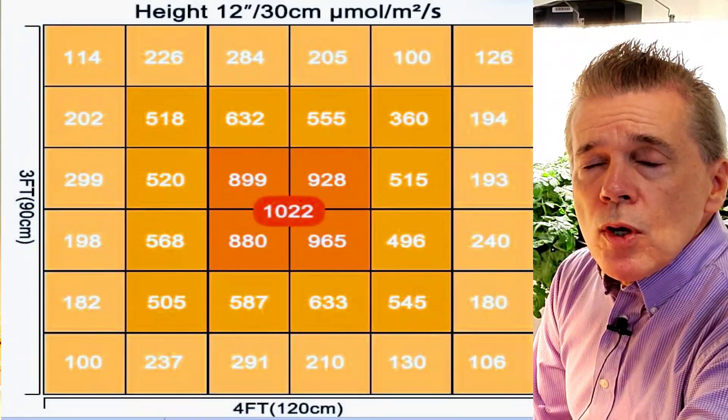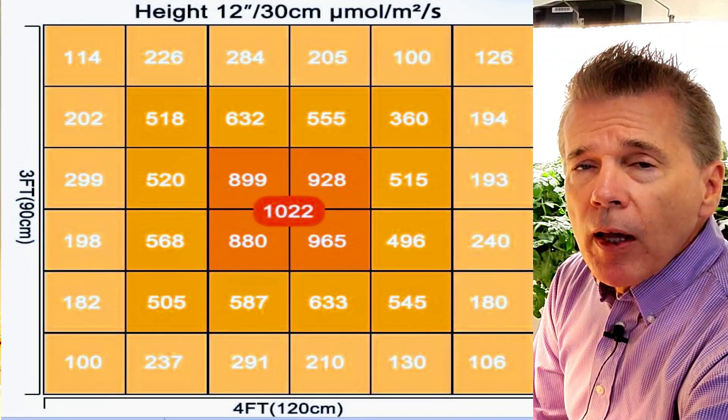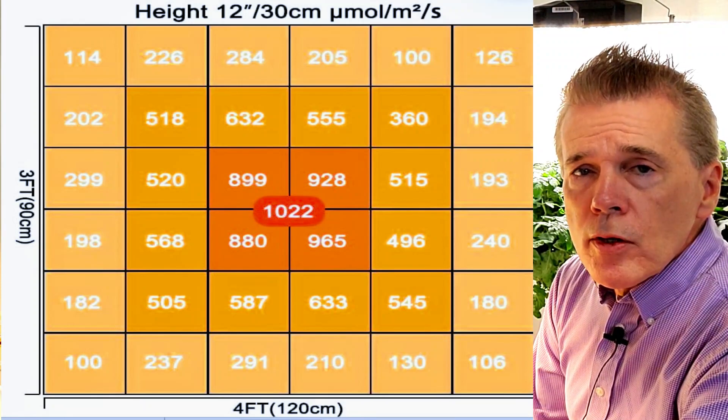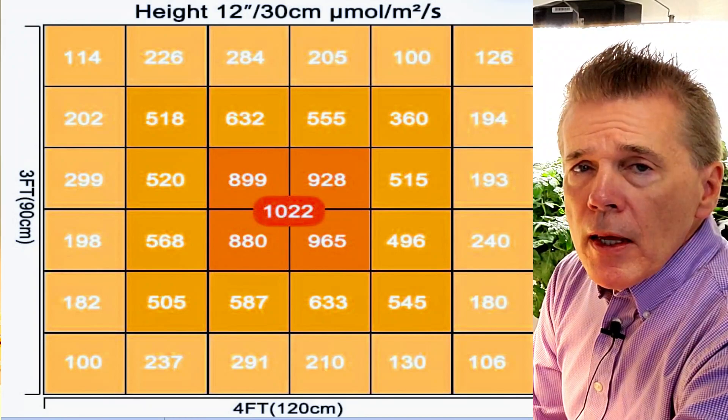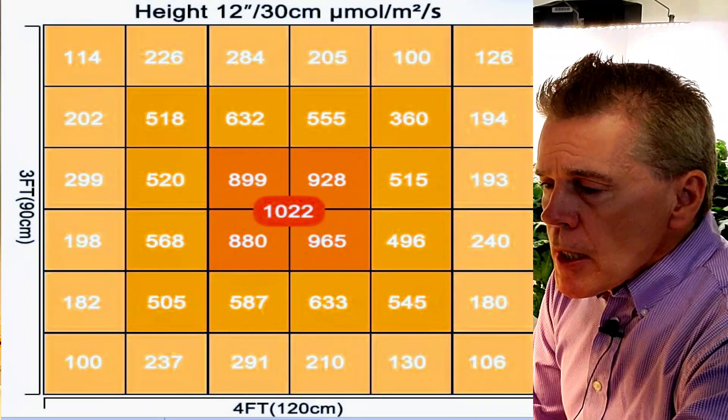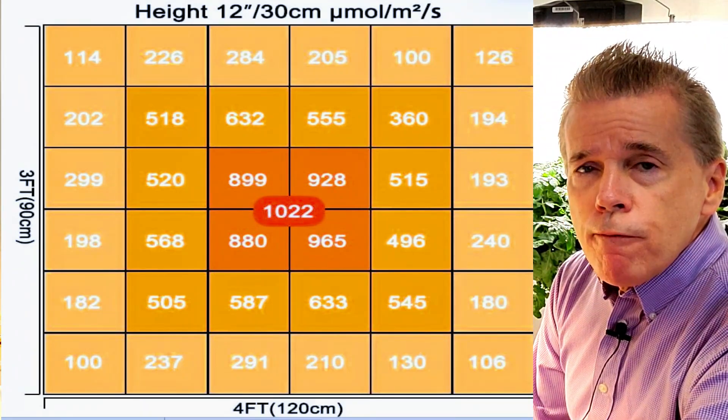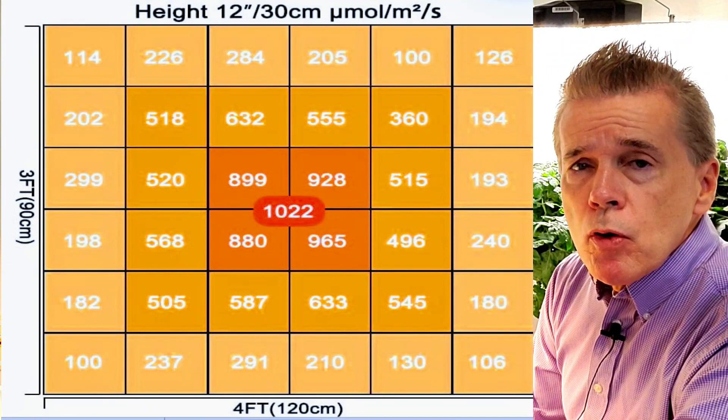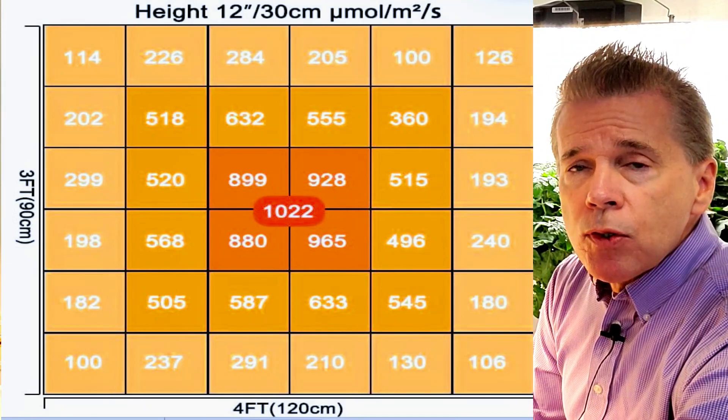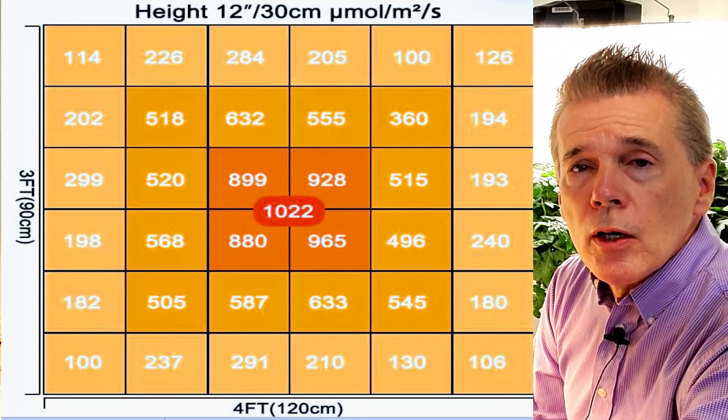Notice that the numbers are varying across the map, and this is at a 12 inch hanging height. The dimensions is something that you look for. You notice on this one that even though it is listed as a three foot by four foot map, that most of the usable light is in the 24 inch by 32 inch zone underneath the light.